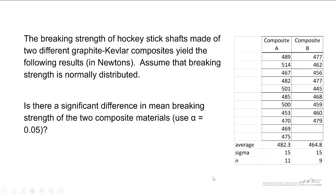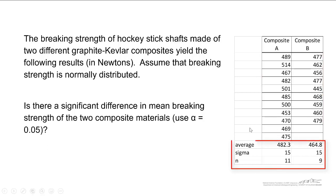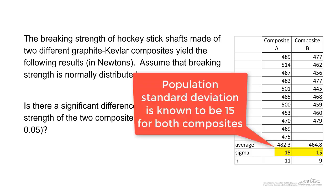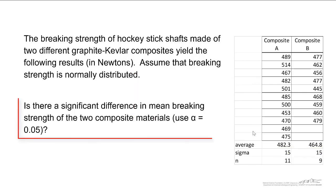For example, the breaking strength of hockey stick shafts made of two different graphite Kevlar composites yield the following results in Newtons. We've got composite A and composite B. We collect two samples so we can compute statistics. In this case, we're going to assume that sigma is known — we know it to be 15. I'm not calculating the sample standard deviation because we know what the population standard deviation is. What we want to know is: is there a significant difference in the mean breaking strength of these two composite materials?